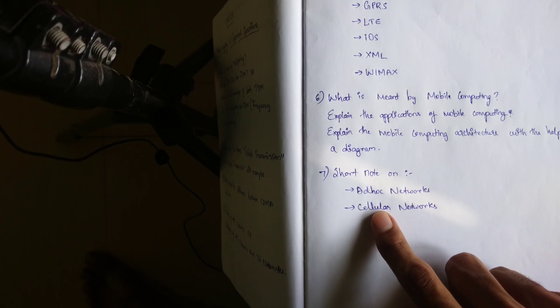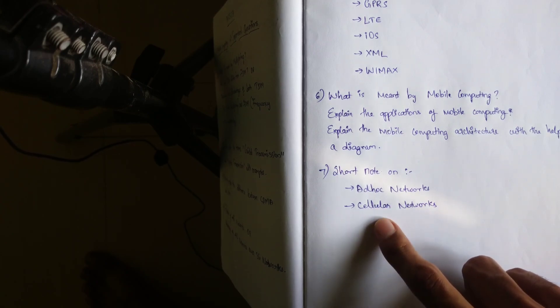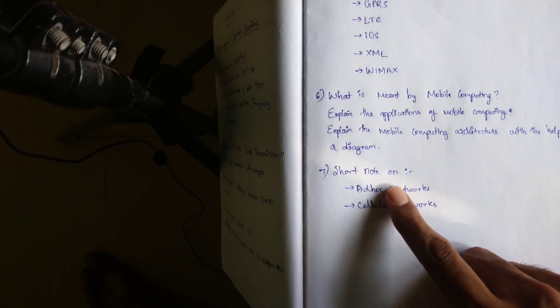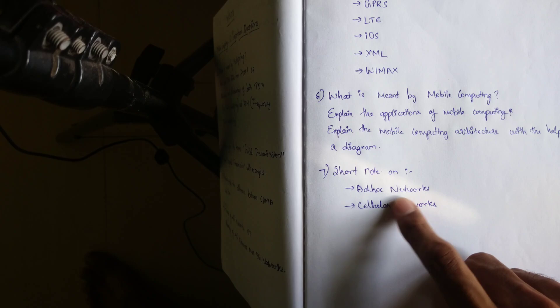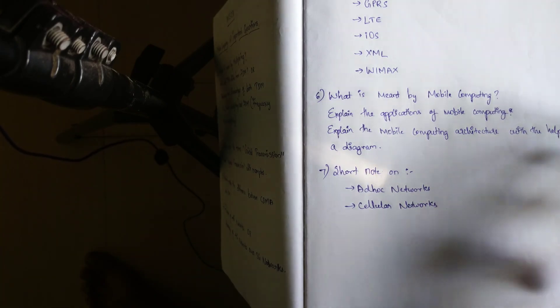The 7th topic that we are going to focus on is short note on ad hoc networks and cellular networks. It can be asked either ad hoc networks or cellular networks or both can be asked in the same examination.